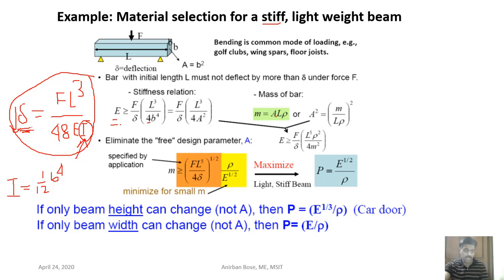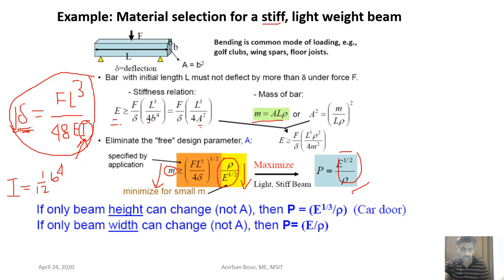The mass expression is m = ρ × A × L. The free variable is the cross-section B. Eliminating B from these two equations and rearranging, we get: m = f(F, L, δ) × (ρ/E^(1/2)). To minimize mass, ρ/E^(1/2) must be minimized, so the performance index is E^(1/2)/ρ.